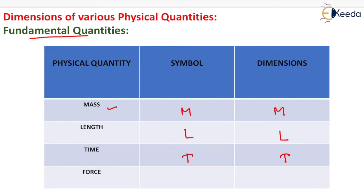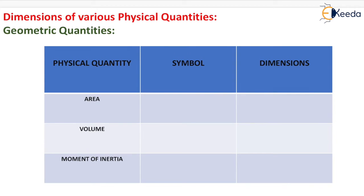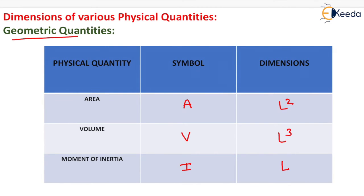For force, the dimension is MLT⁻². For geometric quantities: area, symbol A, dimension L²; volume, symbol V, dimension L³; and moment of inertia, symbol I, dimension L⁴.